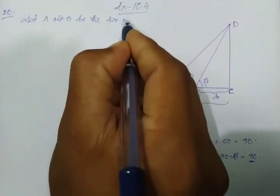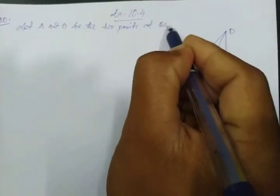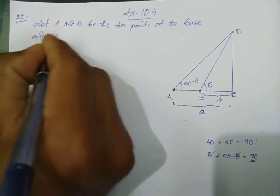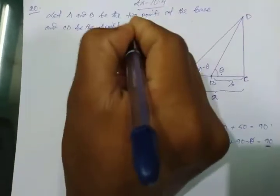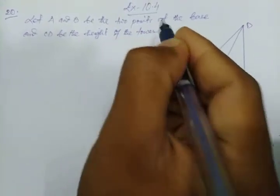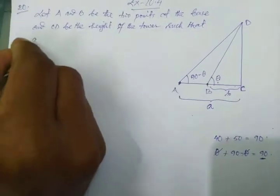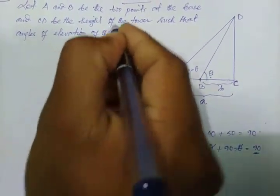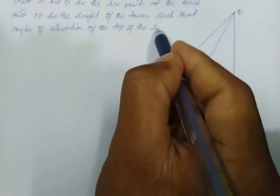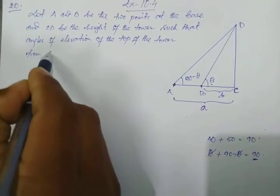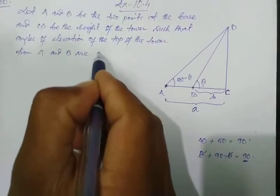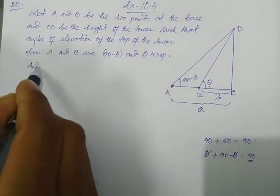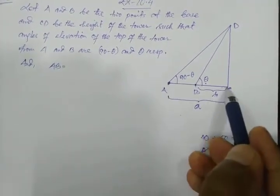So this angle would be 90 minus theta. Now let A and B be the two points at the base, and CD be the height of the tower, such that the angles of elevation of the top of the tower from A and B are 90 minus theta and theta respectively.